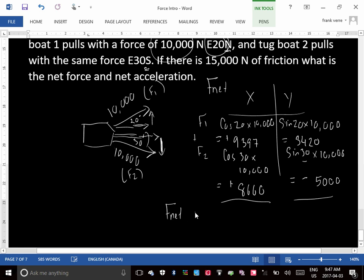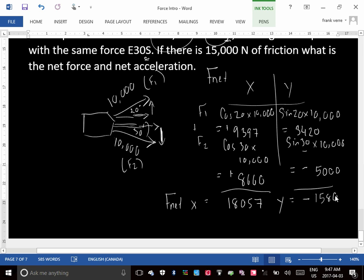Now, what we're going to do is we're going to resolve the net force in the X and in the Y. So what's the net force in the X? It looks very close to 19,000. Is it 18,057? And what's this one? 3,420 and then minus 5,000, which is minus 1,580. Now, what do you think you do next? We have to combine these two and get a net force. So, we're going to take the sum of the squares, and if you do the sum of the squares, what is your net force? It's probably going to be very close.